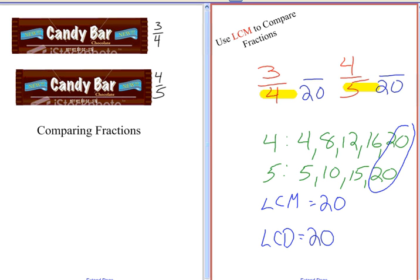So 3 fourths, if I'm changing the denominator from 4 to 20, I'm multiplying it by 5. You also multiply the numerator by 5. 3 times 5 is 15.